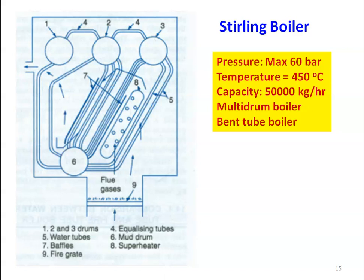It is a high pressure boiler where the burning of the fuel takes place on the grate. We supply coal to the grate, combustion takes place, ash is collected below the grate, and air flows upward. Using the air, the fuel burns and hot gases are produced. The hot gases flow across the tubes and the drum.